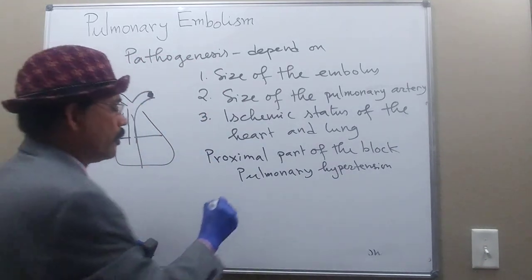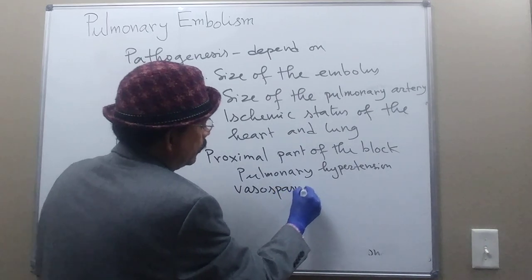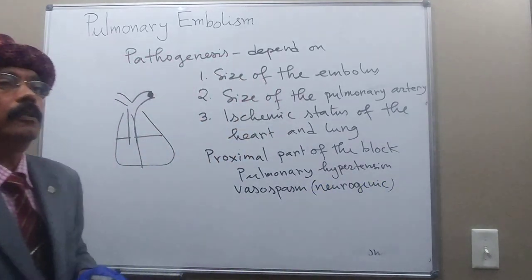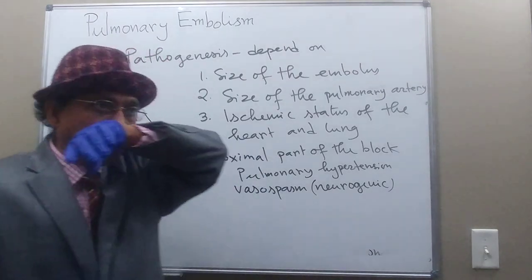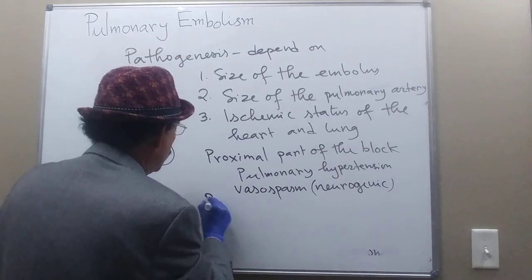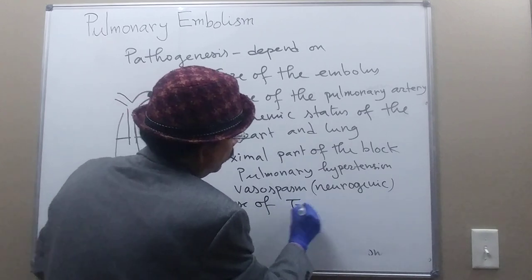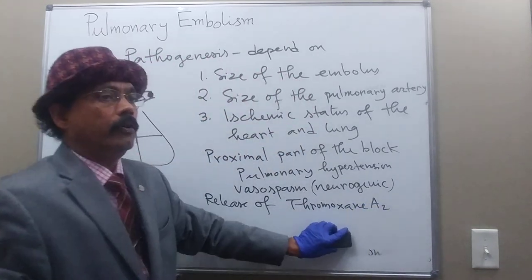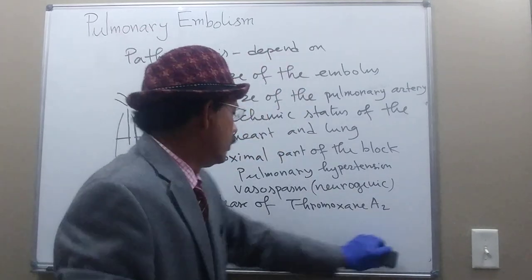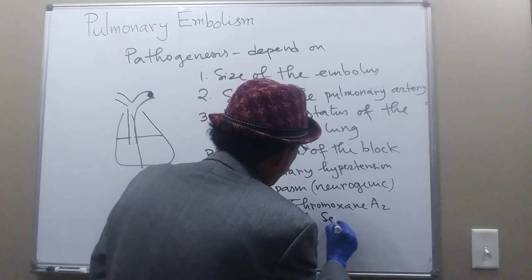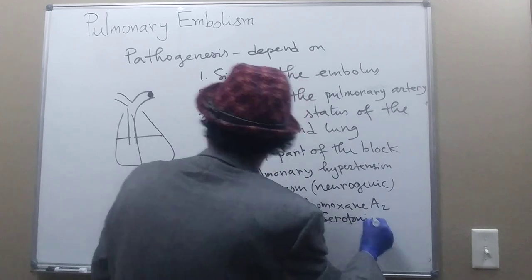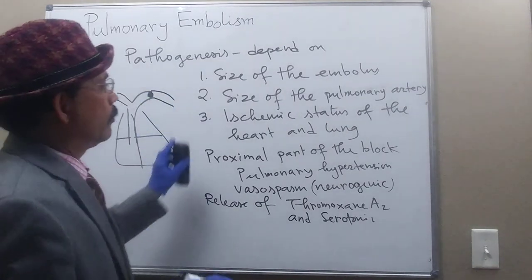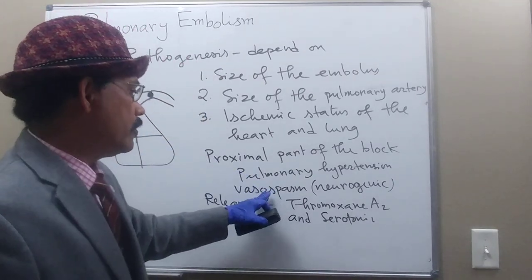There will be vasospasm, especially neurogenic vasospasm. Additionally, there will be release of thromboxane A2 and serotonin due to this block. Proximal to the obstruction, there will be pulmonary hypertension and vasospasm.